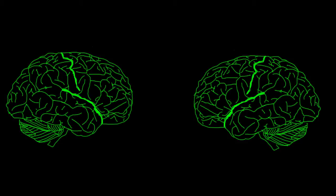Here I have something that looks like a picture of two different brains, but I actually want you to think about it as two halves of the same brain. So imagine that I drew a line down the center of someone's head and then split their brain down the middle. In both cases, this side would be the front of the brain, and this would be the back, and this would be the top, and here would be the bottom.